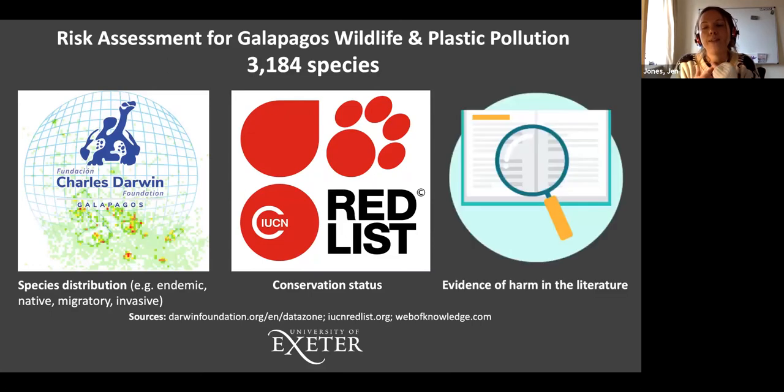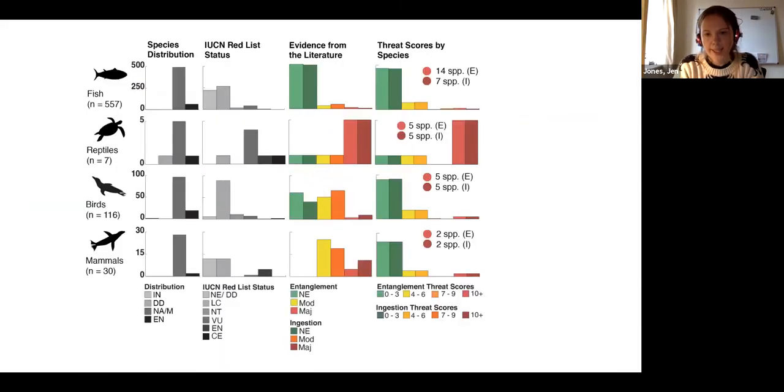And finally, we looked for evidence of harm to organisms from plastics, entanglement and ingestion in the literature. Because although JP is doing some amazing work now to describe the encounters and interactions of vertebrates in Galápagos, at the time of this work nothing was yet published. And so we looked for evidence of organisms of the same genus in other places that had been better studied. And this was the output that that analysis gave us. So we have the species score, distribution, conservation status, the evidence we could find, and then we managed to get a list of 27 species in total that we think are of higher risk.